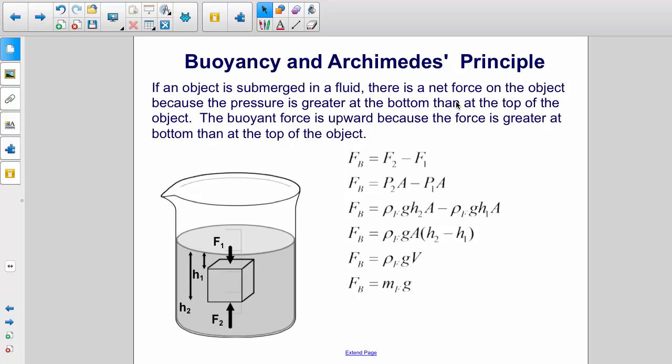If you look at the beaker pictured below, there's an object suspended in the beaker. How does that occur? Well, if an object is submerged in a fluid, there is a net force on the object because the pressure is greater at the bottom than it is at the top of the object.